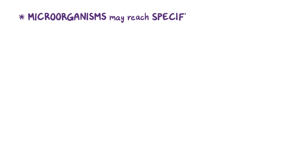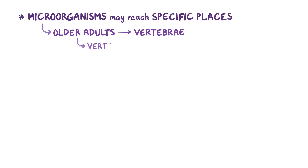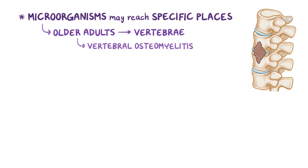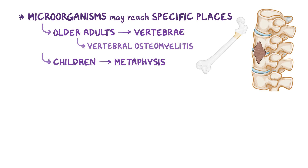Through the bloodstream, the microorganisms may reach specific places in the body, and this mostly depends on the age of the person. In older adults, the microorganisms may reach the vertebrae and cause vertebral osteomyelitis, which usually affects two adjacent vertebrae and the intervertebral disc between them. In children, the metaphysis of long bones like the femur is commonly affected.